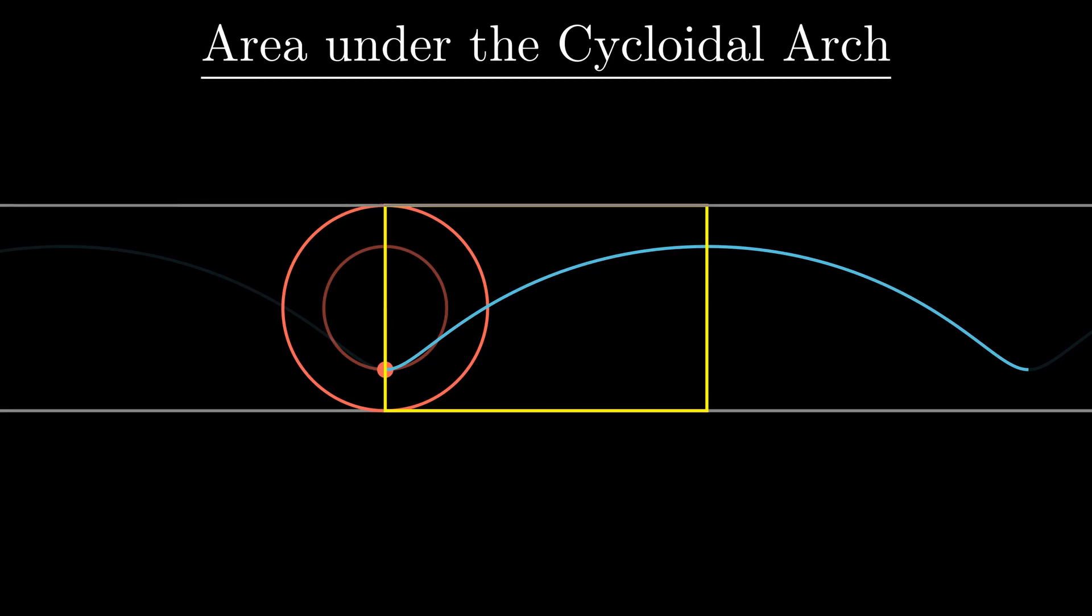The cycloid that we are interested in was generated by the circle rolling in the clockwise direction on a straight line below it. If the same circle were to roll in the counterclockwise direction on the line above it, then the same point would trace out a different cycloid.